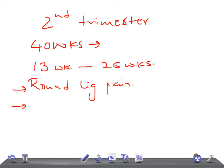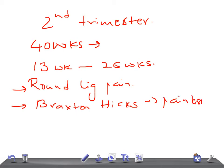As the pregnancy continues during the second trimester, patients will have a painless contraction known as Braxton Hicks contractions. These are painless, low intensity, and have a long duration. They can be palpated as early as 14 weeks, right at the initiation of the second trimester. They should not be confused with labor pains.